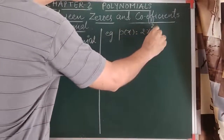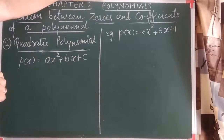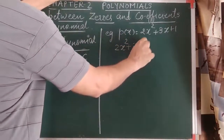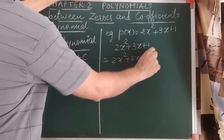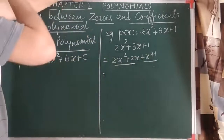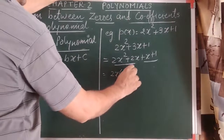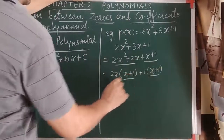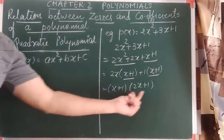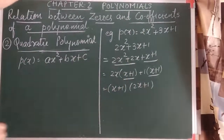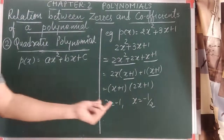The example is 2x² + 3x + 1. To find the zeros, we use the splitting method as discussed previously. The factors of 2×1 = 2 are 2 and 1, so we split: 2x² + 2x + x + 1. Taking 2x common from the first two terms and 1 common from the last two: 2x(x + 1) + 1(x + 1) = (2x + 1)(x + 1). So the zeros are x = minus 1 and x = minus 1 by 2.